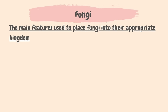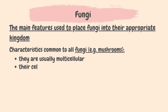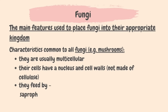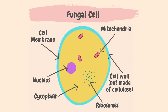Next, let's take a look at the main features that help to place organisms into the kingdom of fungi. A mushroom is an example of a fungus. Fungi are usually multicellular. Cells have nuclei and cell walls that are not made from cellulose. They feed by saprophytic nutrition — that is, on dead or decaying material — or by parasitic nutrition, that is, on live material. Here's an illustration of a fungal cell; it has a cell wall, but it's not made of cellulose like in the plant cell.